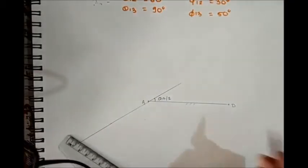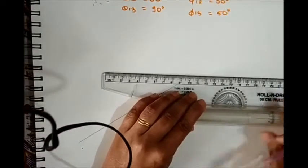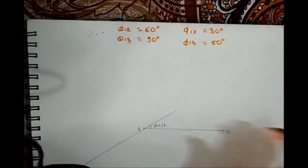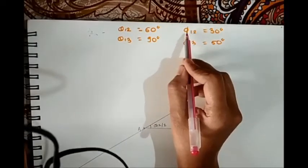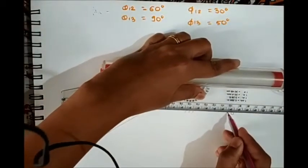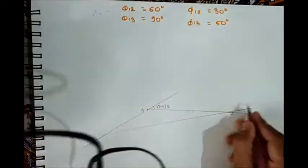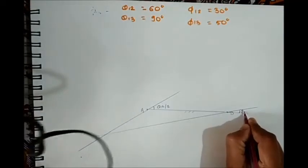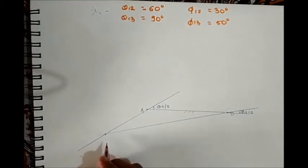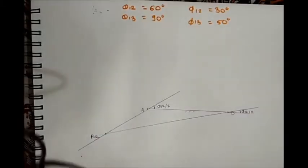Similarly, rotate AD at point D through 15°, because that is φ12/2. This angle is measured from horizontal and equals φ12/2. Both lines meet and intersect at a point — that is point R12, the relative pole for the second position.